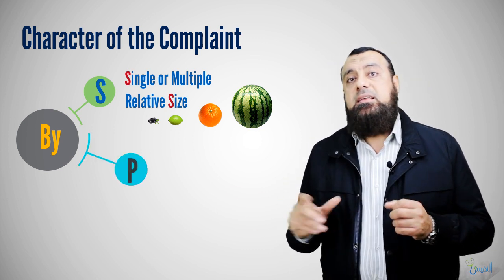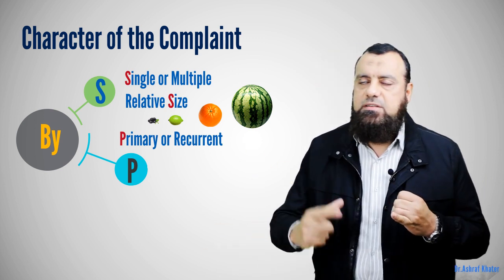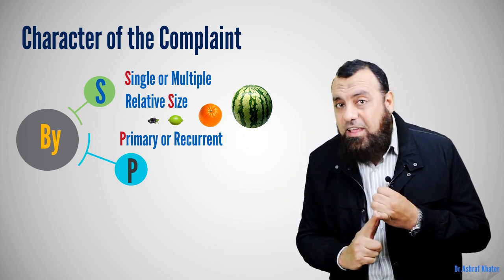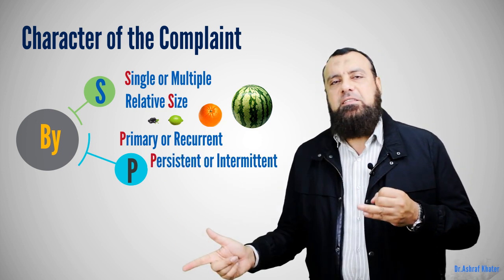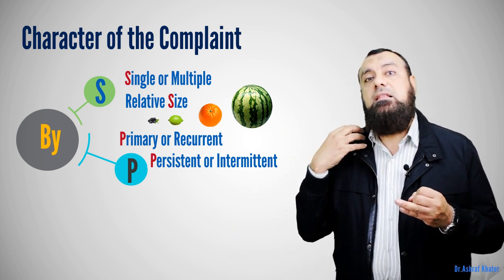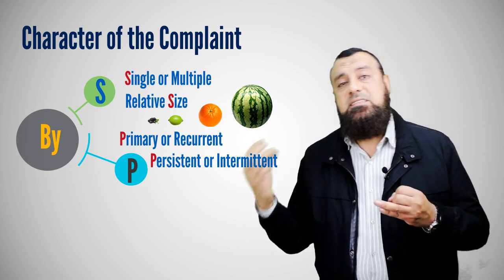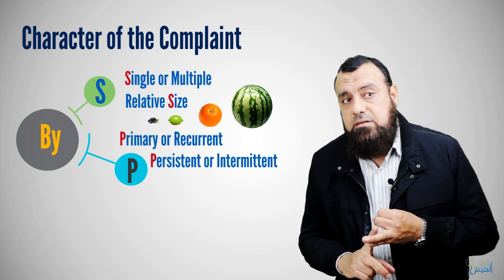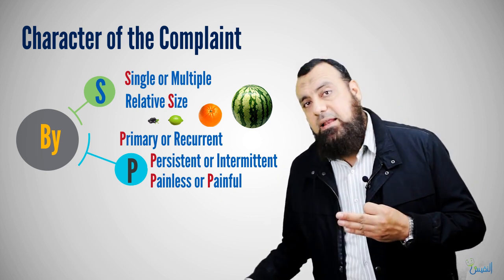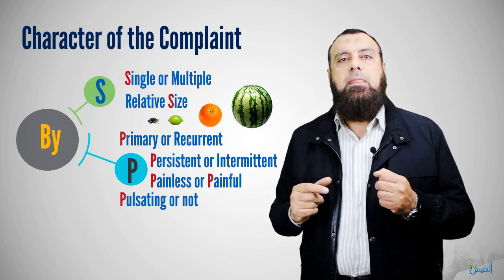By the word P: is it primary or recurrent? For example, there is recurrent goiter or recurrent hernia. Is it persistent or intermittent? For example, intermittent swellings like hernia or pharyngeal diverticulum — they appear and disappear. Is it painful or painless?